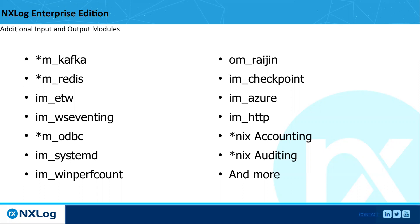We've also got OM Rhygen — one of our new products. Rhygen is a schema-less database that accepts JSON strings and creates fields itself. There are also Checkpoint inputs, Azure inputs, IM HTTP (note that OM HTTP is in CE, but EE adds IM HTTP as well), Unix and Linux accounting, Unix and Linux auditing, and much more. If we went over all modules it would take several pages.